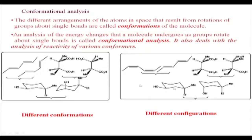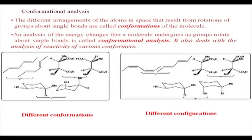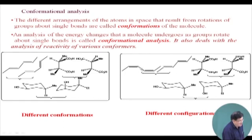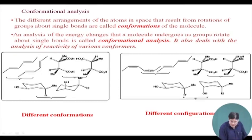Here are some examples of the difference between conformation and configuration. Configuration is the arrangement in space, but here, to change from one configuration to the other is difficult. For example, this is a cis double bond — the two groups are in the cis direction. This is a cis-cis diene. That is the configuration of the system. The other molecule has a trans-trans arrangement around the double bonds — that is a trans-trans diene. The relationship between these two are configurational isomers — they have different configurations around the double bond.